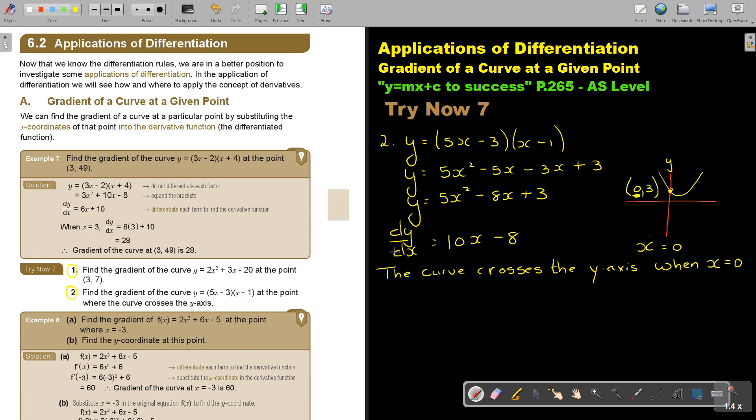So basically in the derivative function, I am going to say, when x is 0, then dy by dx will be 10, and I am going to substitute now that 0 minus 8. And that is going to give me an answer of negative 8.